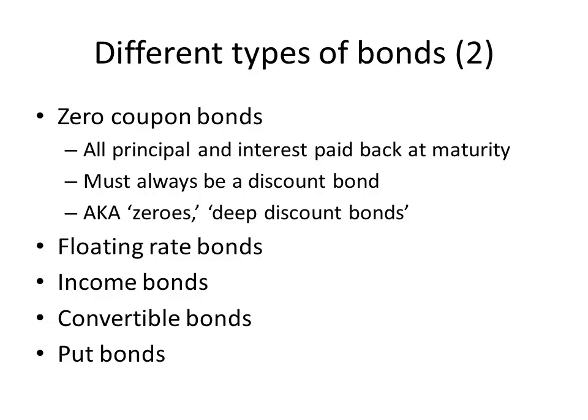Then we have floating rate bonds, which are kind of like adjustable rate mortgages. The coupon rate on these bonds floats with some benchmark interest rate, perhaps the yield on the 10-year treasury bond. As a result, these bonds' coupon rates will float to keep close to the required yield to maturity. The idea is that the face value of these bonds will stay very close to par value throughout their entire lives.